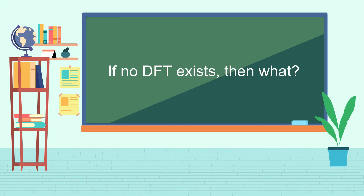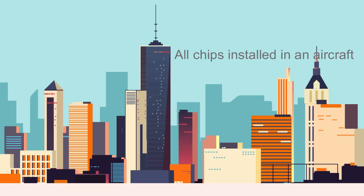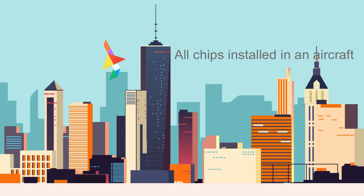Now we'll discuss the question: what will happen if no DFT exists? Suppose we made a hundred chips — 90 of them are fault-free, but 10 have some manufacturing defects. These manufacturing defects can hamper the actual functionality of a chip. Assume all hundred chips are made for controlling and automation purposes of any device.